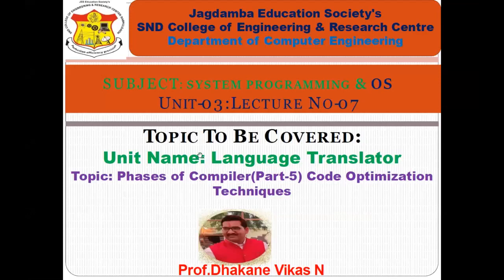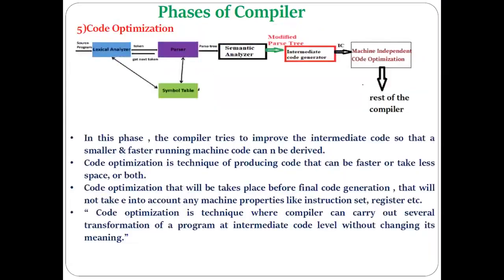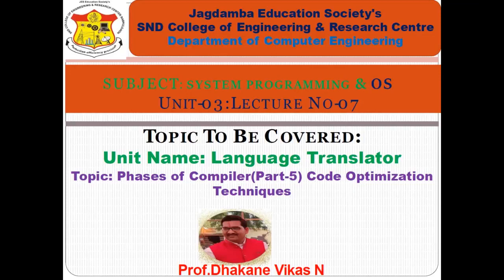Hello students. Let's continue with our unit number 3 and lecture number 7. Last time we discussed the fourth phase of the compiler — intermediate code generation — where we covered what intermediate code is, different types, and in particular the 3-address code and its representations in detail. Today we are going to discuss the next phase of the compiler: code optimization techniques.